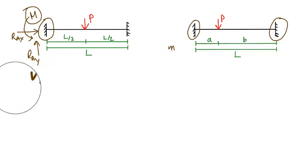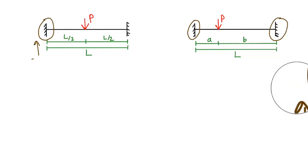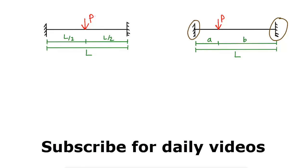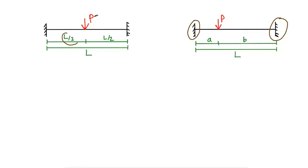Let's start with the first one, where there is a load P acting at the mid of the beam — L/2 from one side and L/2 from the other side — and the total length of the beam is L. So how we can find the bending moment for this kind of beam with fixed supports?